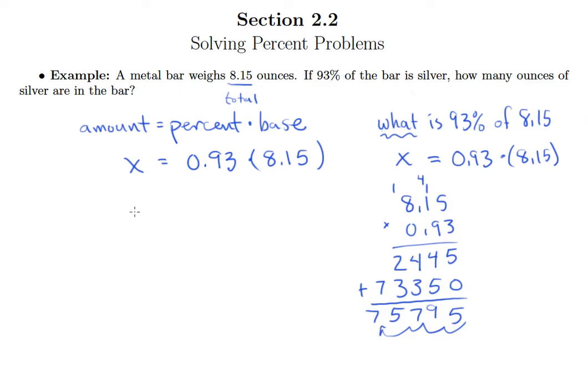So our answer here is x equals 7.5795, but remember, this is a practical problem, so it needs a label on it. So it's 7.5795 ounces of silver.